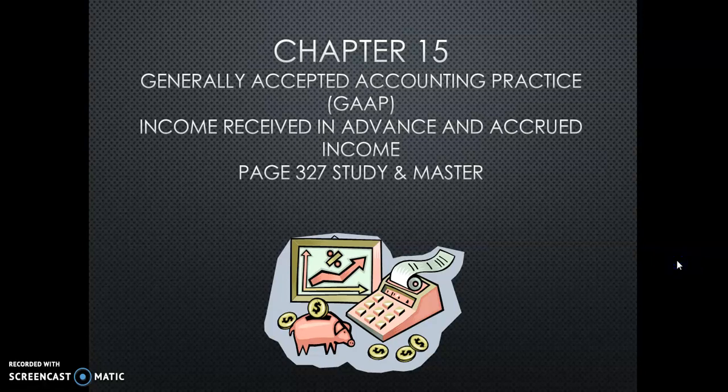Hello gentlemen. We are going to look at the next part of the work relating to GAAP. It is called income received in advance and accrued income. We are on page 327 of your textbook.